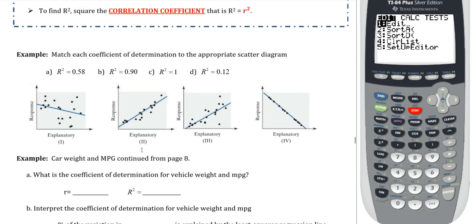Before we get there, first example, we're going to match each coefficient of determination to the appropriate scatter diagram. Now note that some of these are positive, some of them are negative. All R² is going to be is how linear it is. It does not care if it's positive or negative linear. It's always going to be between zero and one. So we're simply going to look for what the strongest linear relationship is, then what the next strongest is, whether or not it's positive or negative.